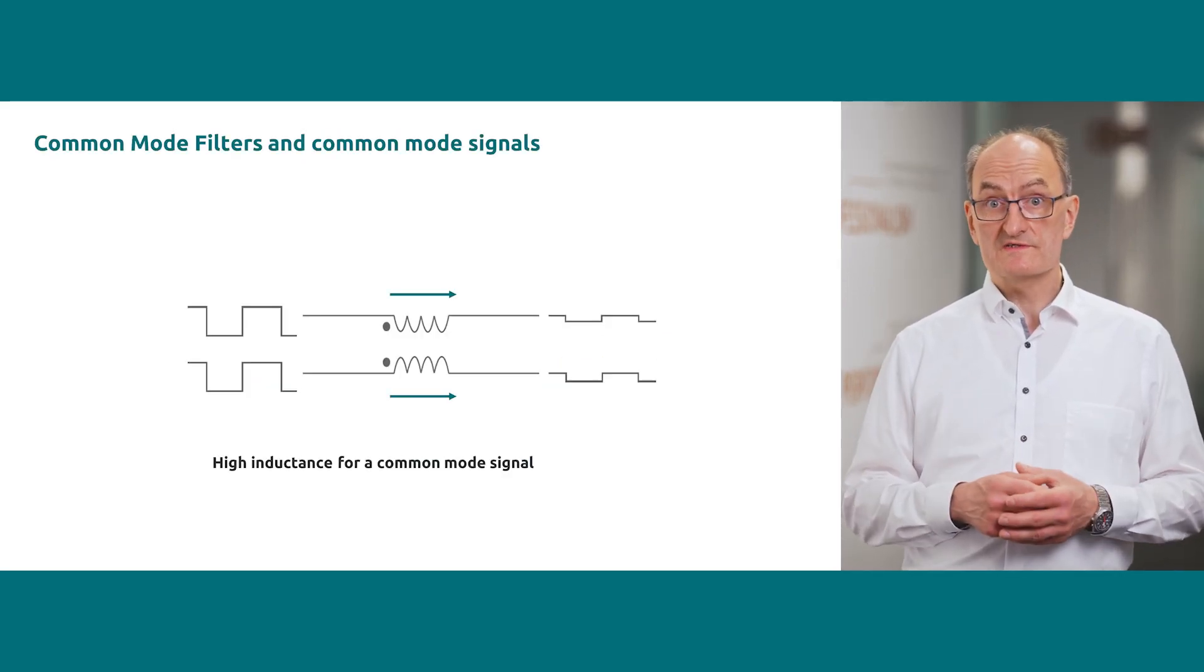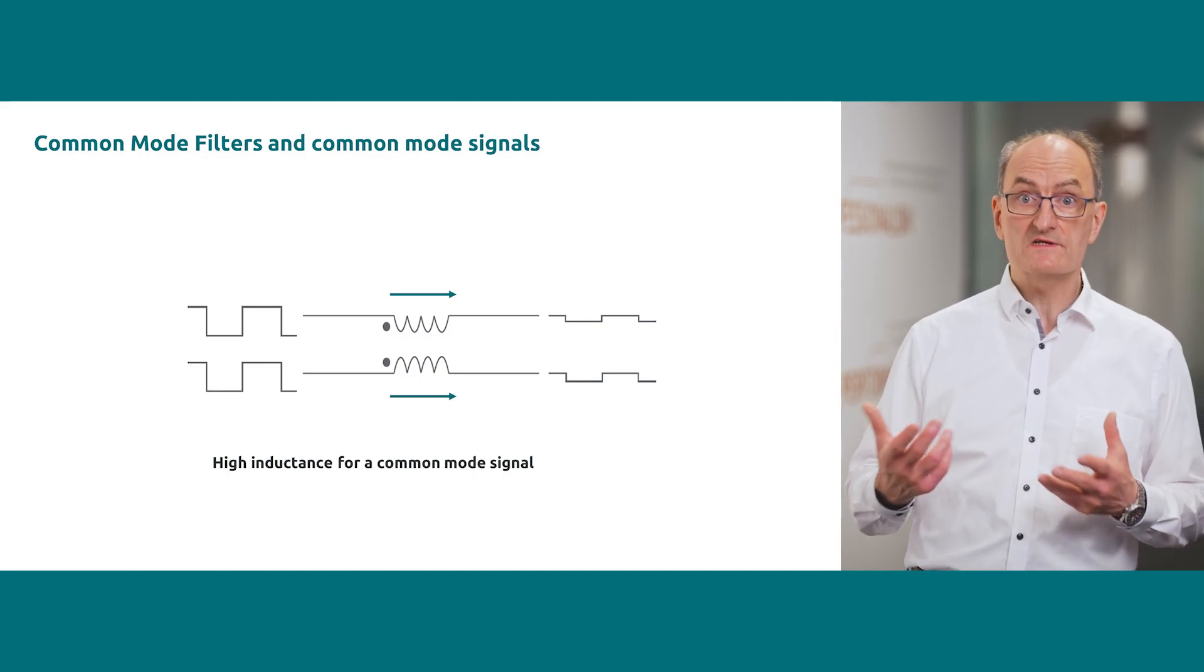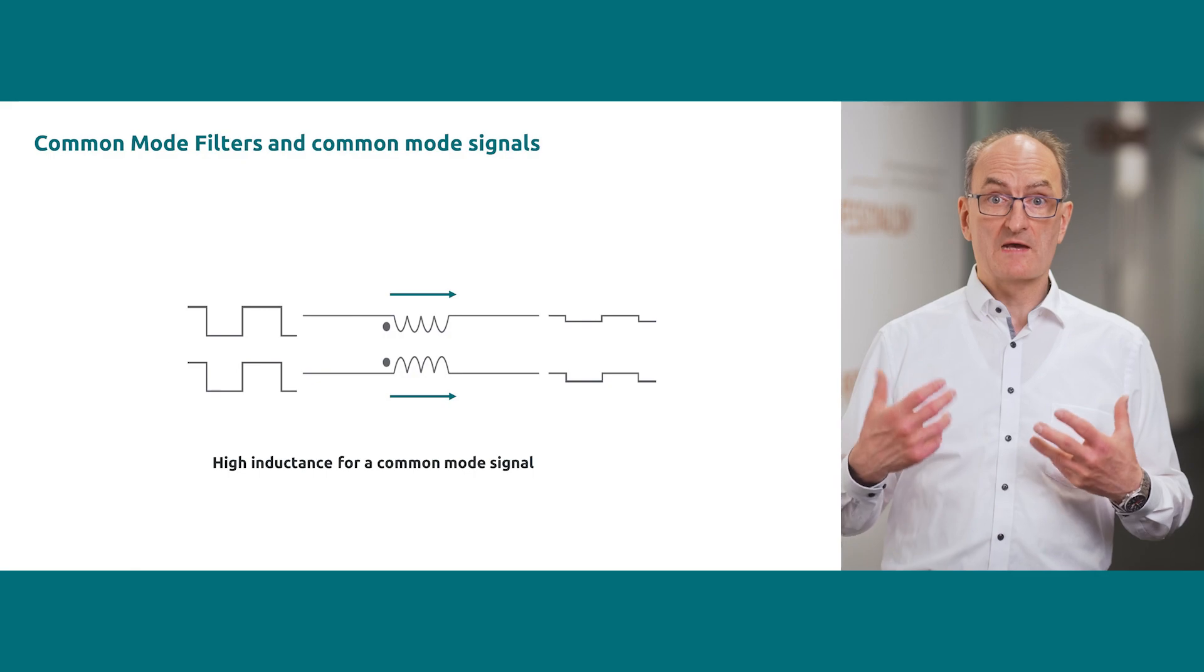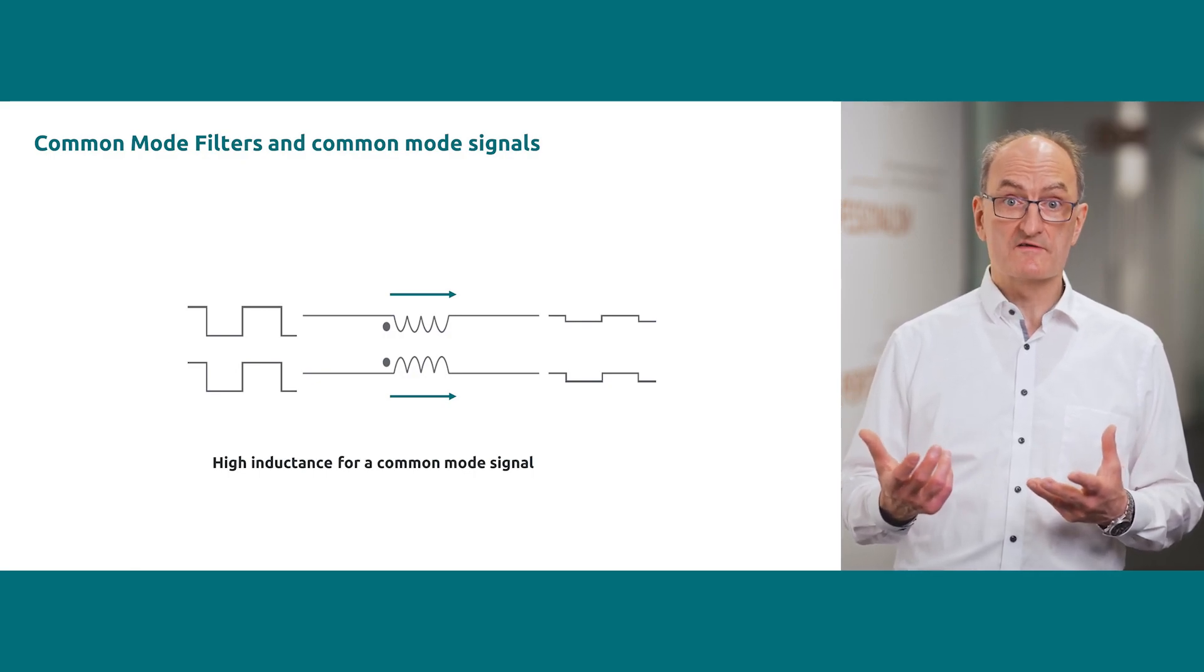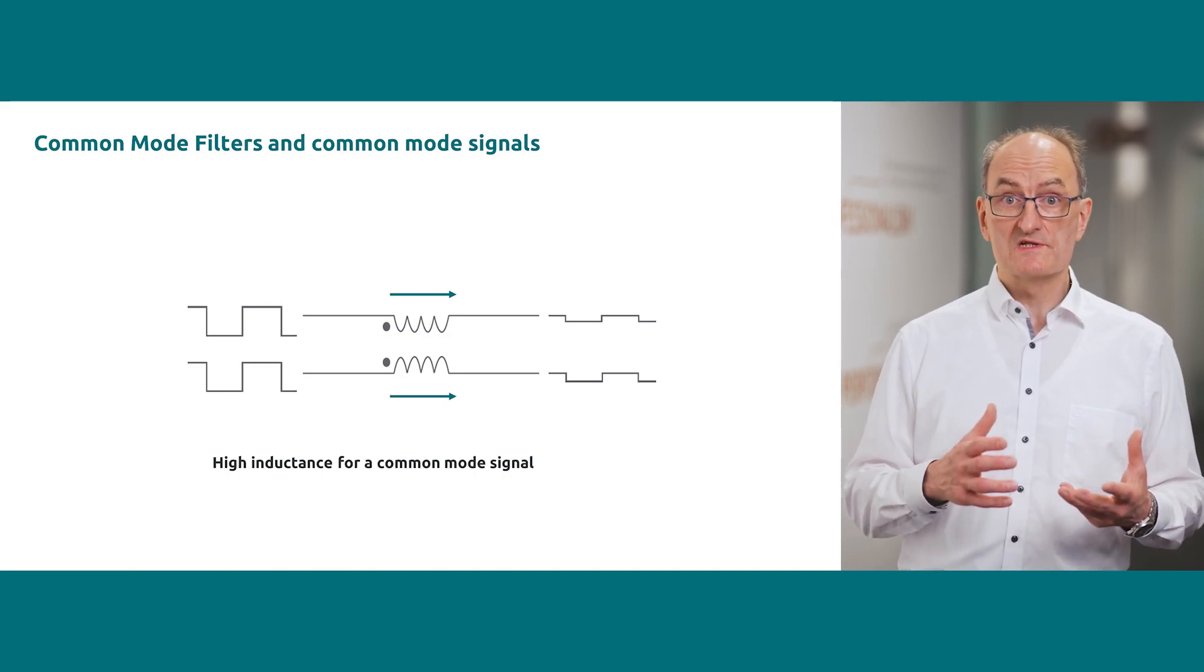For common mode noise, the inductance of the common mode filter in the target frequency range will be significantly higher. A common mode filter has a high inductance for common mode noise and a low inductance for the differential signal.